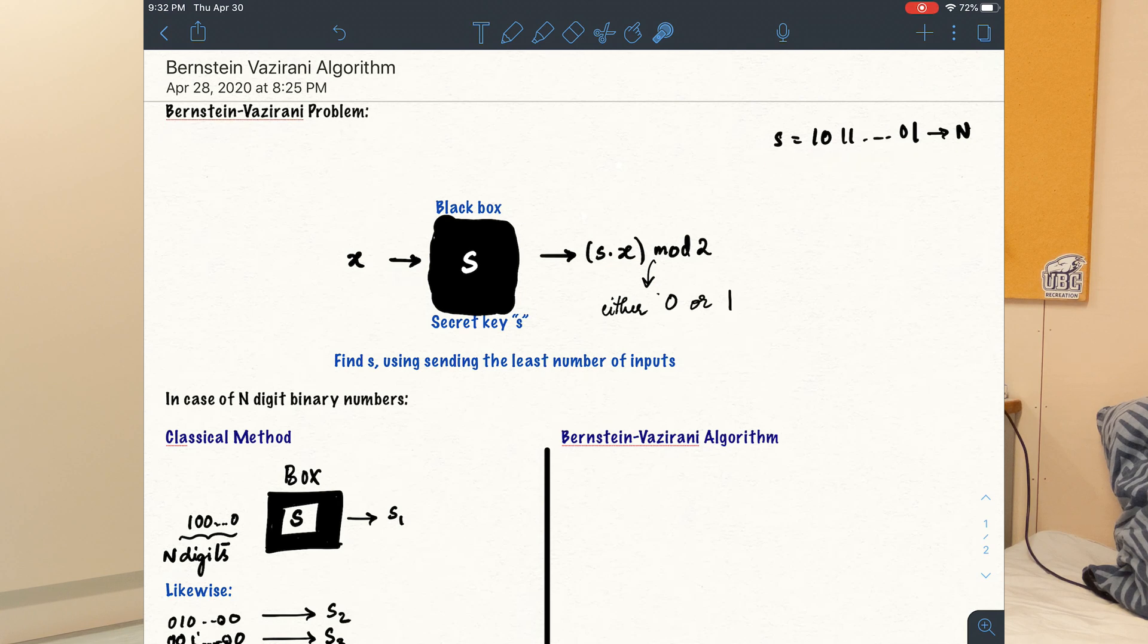For example, it might look like this. We can give any number of tries, but the output is only either 0 or 1.